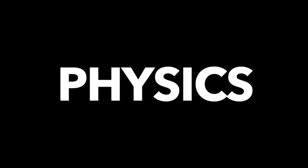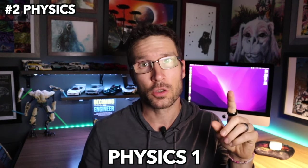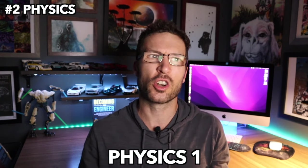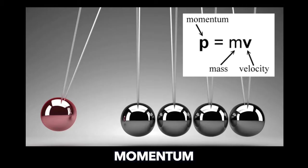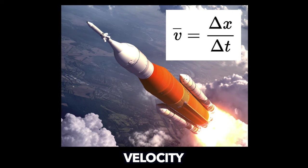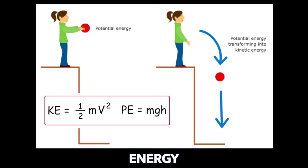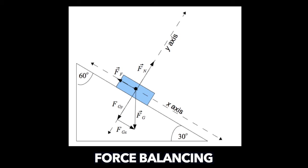Category number two: physics. First up we have physics 1. In physics 1 you're gonna learn all about Newton's laws of motion and how to apply them. You'll learn about momentum, velocity, gravity, friction, and energy, and you'll learn how to utilize trigonometry to determine the forces on a given object.